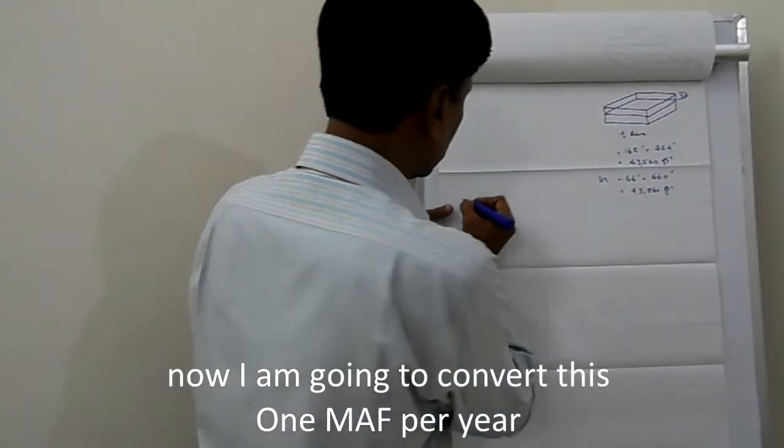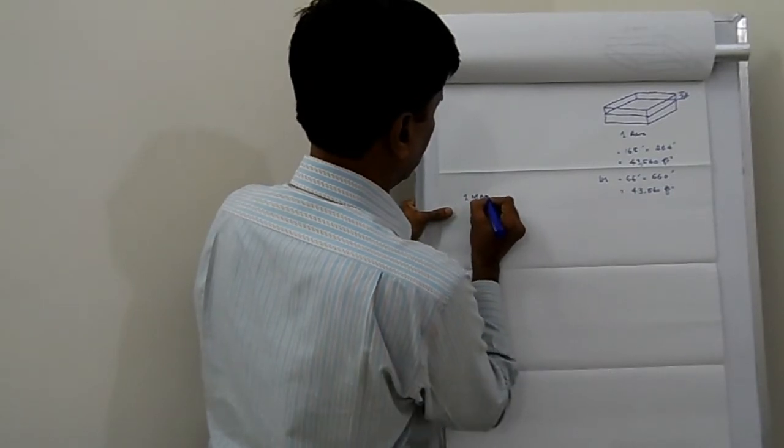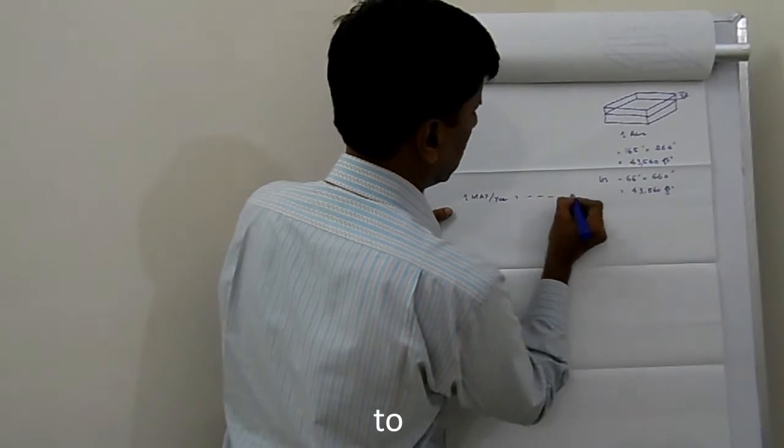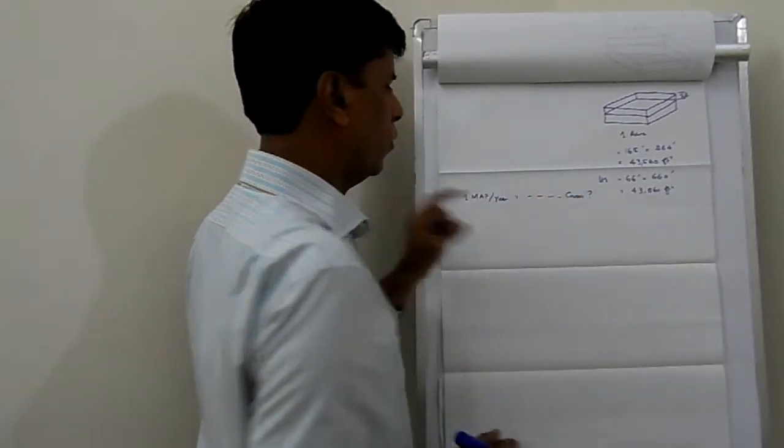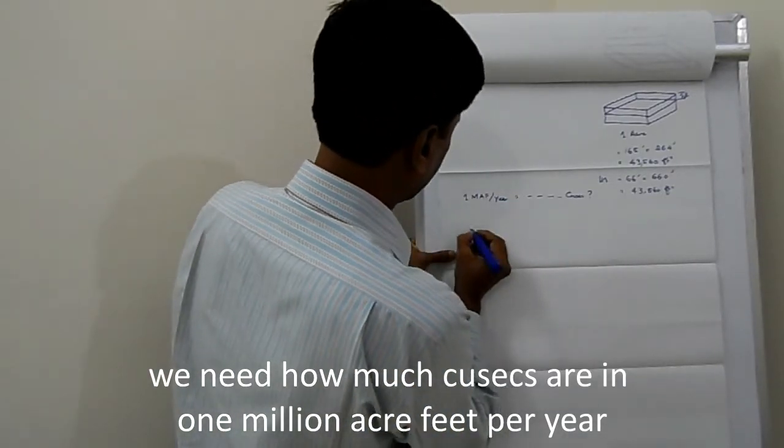So now I am going to convert this 1 million acre feet per year to cusecs. We need how much cusecs in 1 million acre feet per year.